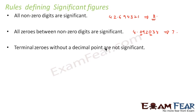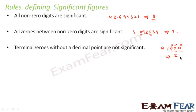Terminal zeros without a decimal point are not significant. For example, consider the number 47000. How many significant digits are there? The terminal zeros — there is no digit after them and no decimal point — so these zeros are not considered significant. Therefore there are only two significant digits, 4 and 7, because the zeros at the end without a decimal point are not counted.